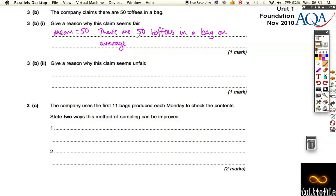The problem is, though, that even though the mean is 50, that means that some might have 50, but some might have more, that's a bonus, but some might have less. So they're saying there are 50 toffees in every bag, they're not saying approximately 50, or on average 50, they're saying there's exactly 50. And that's not true.